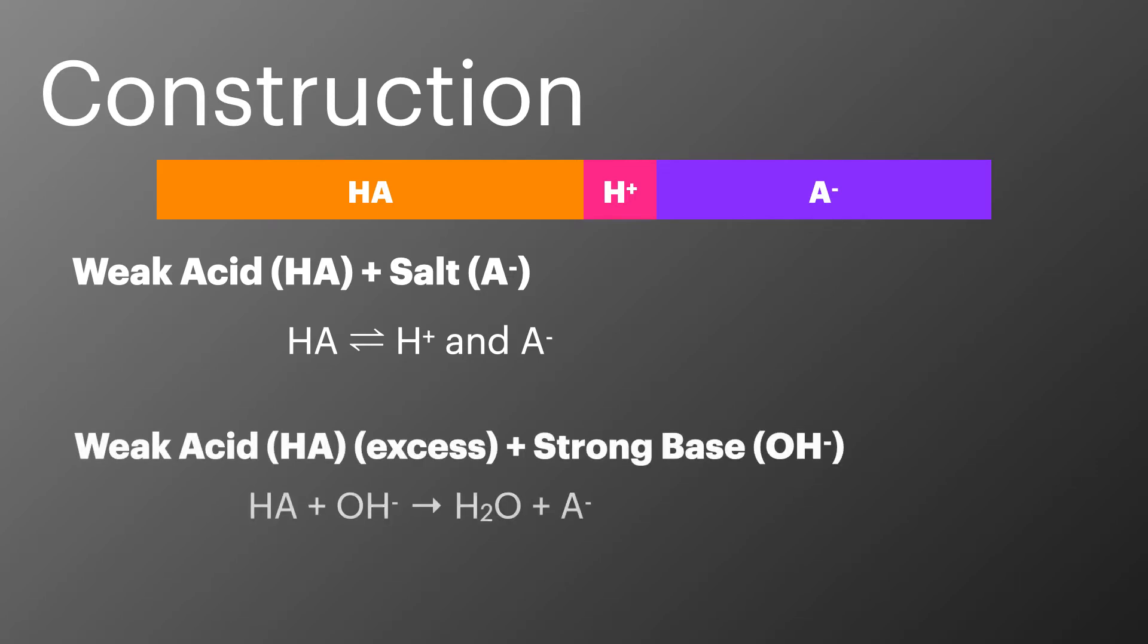The second way we can create an acidic buffer is by reacting a weak acid with a strong base. It's important that the weak acid is in excess and if we want to calculate the pH of this solution it's the same as the process that we do for a weak acid reacting with a strong base and there's a link to a video at the top of the screen now.